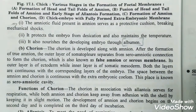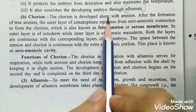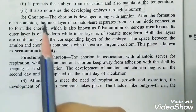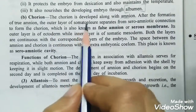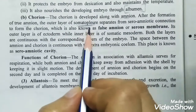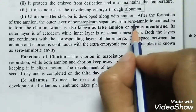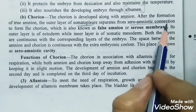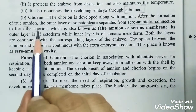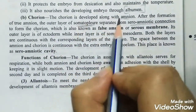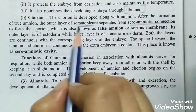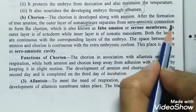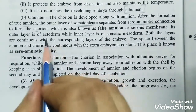Next is chorion. Chorion is developed along with amnion. After the formation of true amnion, the outer layer which is somatopleur is separated from the sero-amniotic connection. This separated outer layer becomes the chorion.